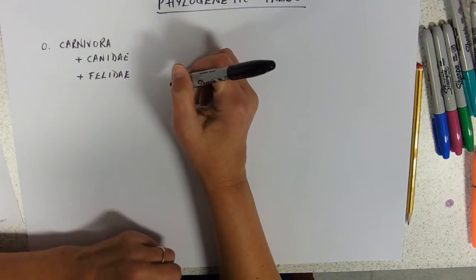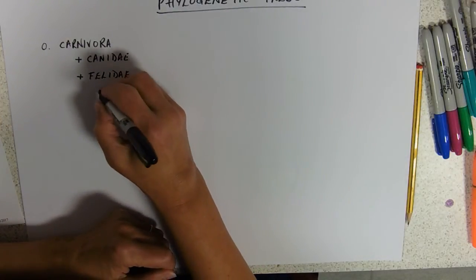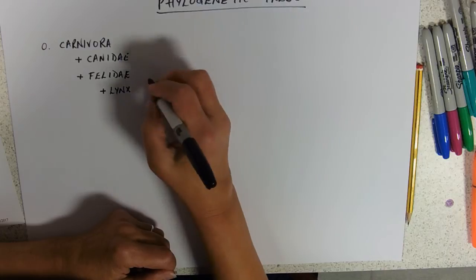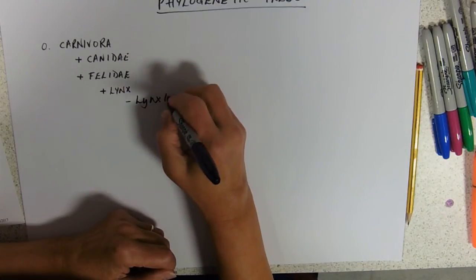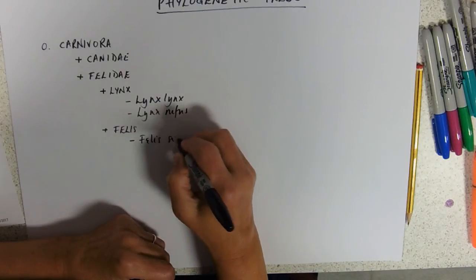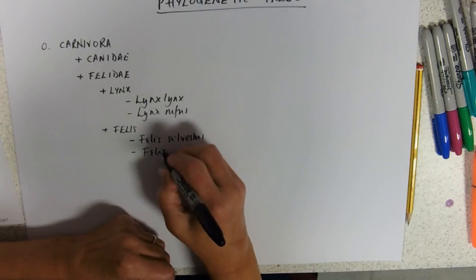And then inside that family, you might have genera, like the lynx. And if you open that file, you might then find your species. So, lynx lynx. Nothing very clever about this, is there? And lynx rufus. And you've got the genera, felis. And if you open that file, you would probably find felis sylvestris, which is the wildcat. And felis catus. Imaginative name, the domestic cat.